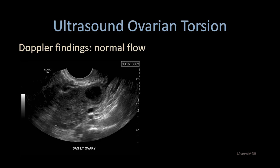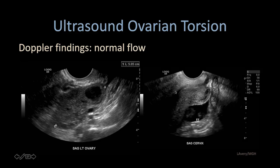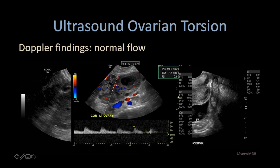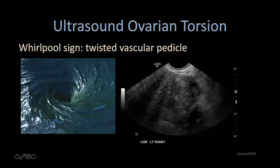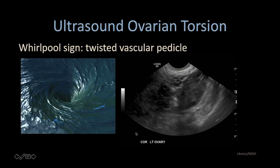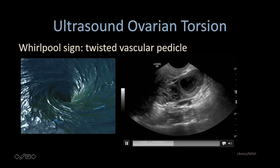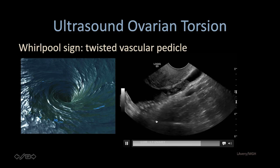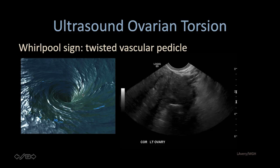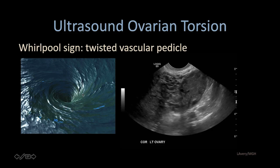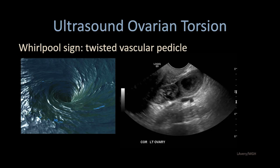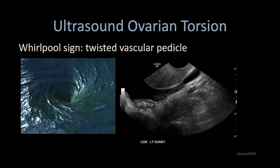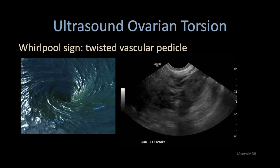Here's an enlarged ovary measuring 5 centimeters with a bit of free fluid in the cul-de-sac. There was normal Doppler flow with a low-resistant waveform. But when we looked at the vascular pedicle, we saw the swirling appearance — the whirlpool sign. This patient went on to laparoscopic evaluation, and indeed a torsion ovary was discovered.